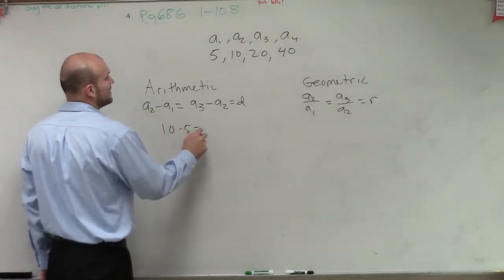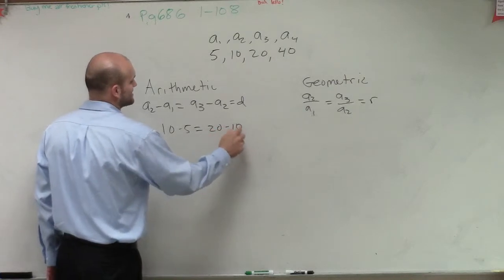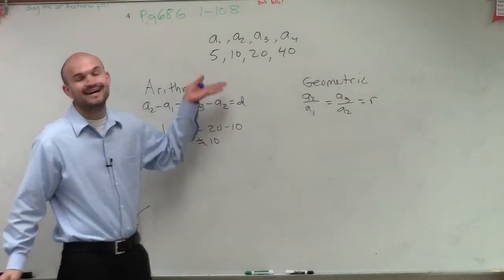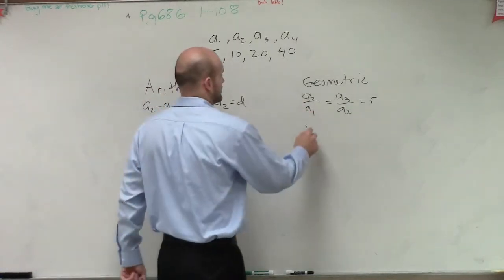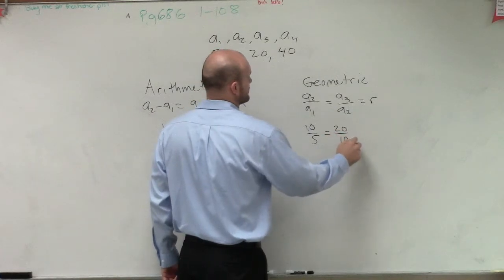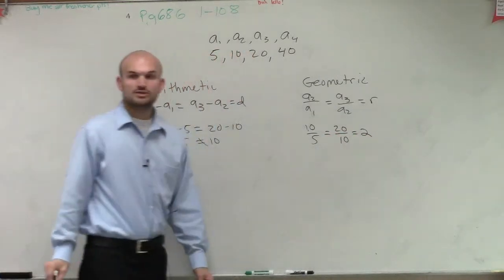So if I do 10 minus 5, that has to equal 20 minus 10. Well, 5 does not equal 10, so this is not an arithmetic sequence. Now let's check geometric: 10 over 5, is that equal to 20 over 10? Yes, it is. That equals r, which is 2. So this is a geometric sequence.